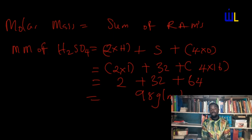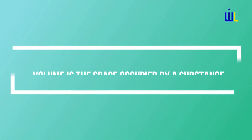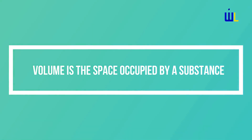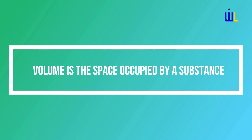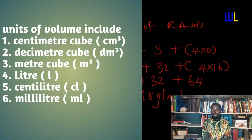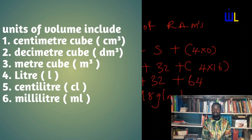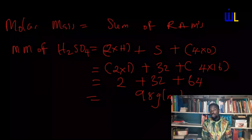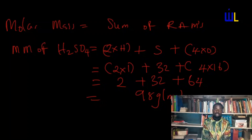We go to the next quantity, which is volume. Volume of a substance is simply the space occupied by that substance. We have many units to measure volume: cm³, dm³, metre cube, centilitre, millilitre, and so on, depending on the part of the world you are in, as curriculums actually differ.